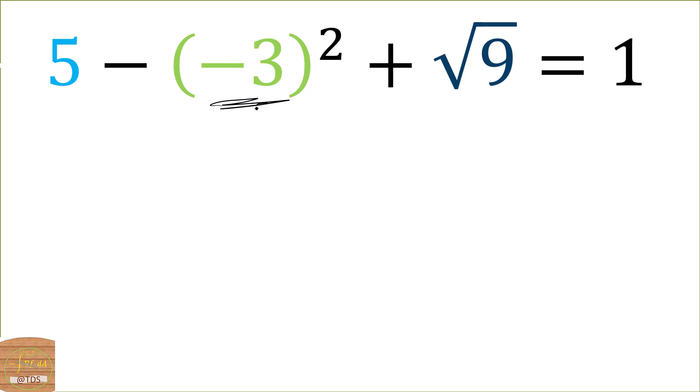So I'll get 5 minus 9 plus 3, since the square root of 9 is 3. Now, 5 minus 9 will be negative 4.